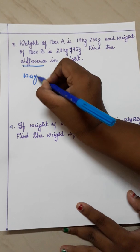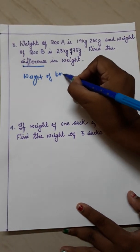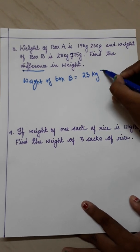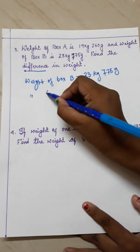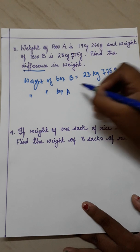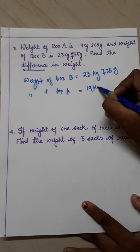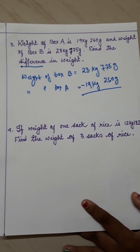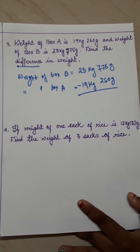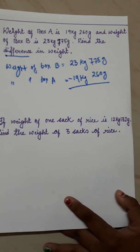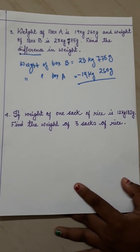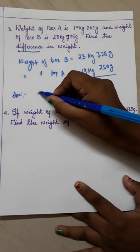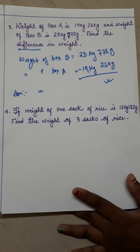We will write weight of box B equals to 23 kg 775 gram. Weight of box A equals to 19 kg 260 gram and then what we have to do? Normal subtraction. I am not showing you the subtraction because I am pretty sure that you can do the subtraction alone. So you will do the subtraction and after that you will write the answer by your own. You can do it, right? Yes, you can do.